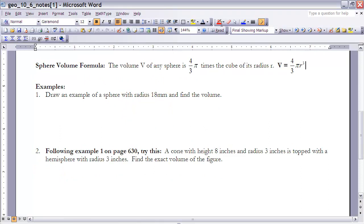The sphere volume formula then. We can find the volume of the sphere by taking 4 thirds times pi times the cube of the radius. So we would write that like this: Volume equals 4/3 π r³.